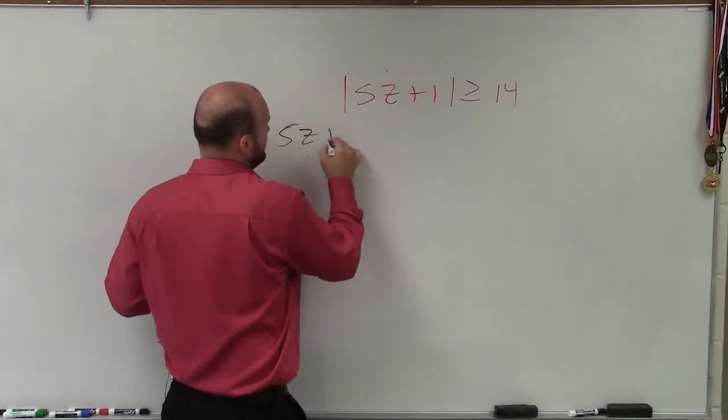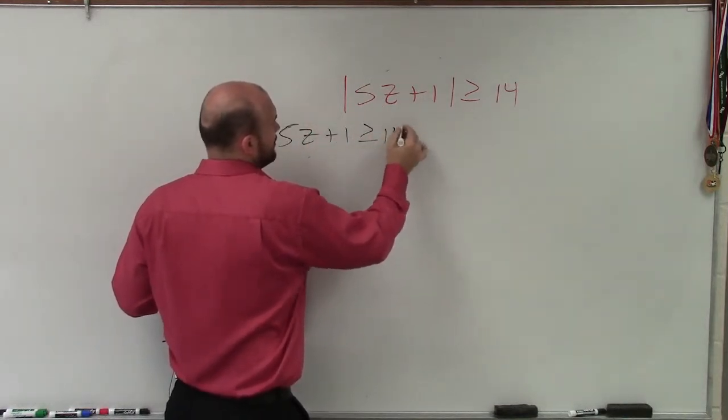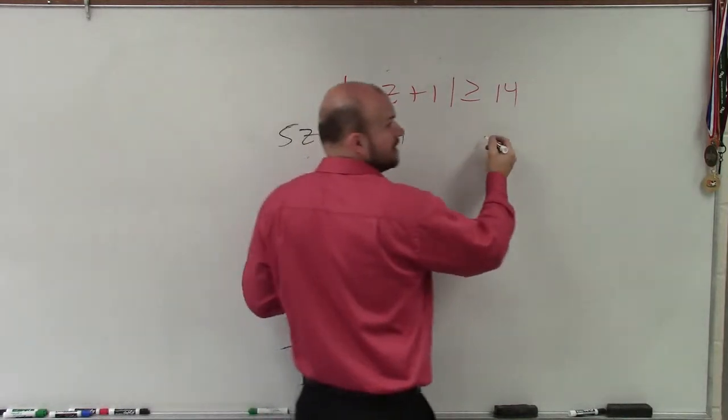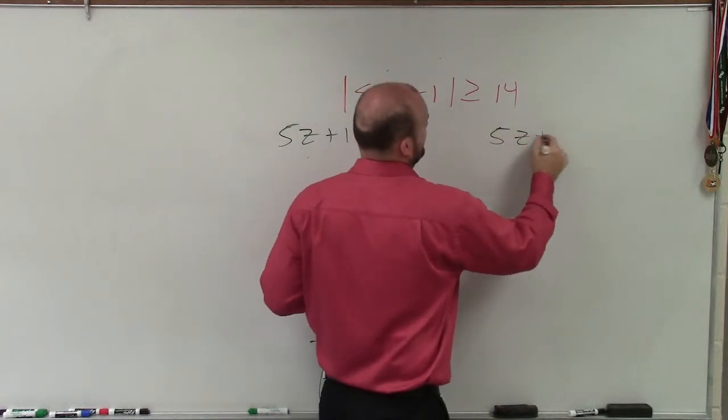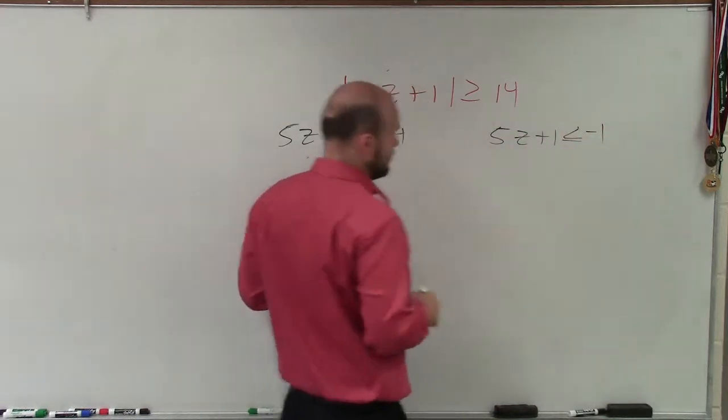Therefore, I have 5z plus 1 is greater than or equal to 14. And now I need to create the second case, which is 5z plus 1 is less than or equal to negative 14.